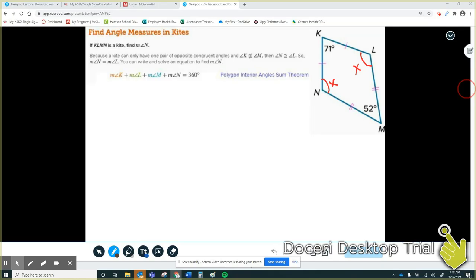Also, again, like I said before, we use the polygon interior angle sum theorem to figure out that the inside of a quadrilateral always adds up to 360 degrees. So we will use that. Angle K looks like it's 71 plus angle L, which we don't know, plus angle M, which is 52, plus angle N is once again X. We don't know it. If I add all four of these together, it should give me 360.